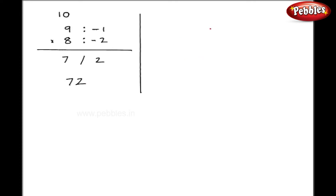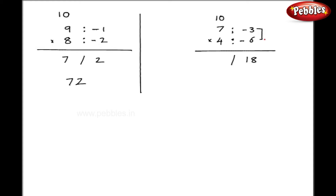Let's take another example. Pay attention to this example because we have some carry overs. I will take 7 into 4. Again my base is 10, and my subtraction is 7 minus 10 is minus 3, and 4 minus 10 is minus 6. On the right hand side I have the multiplication: minus 3 into minus 6 is 18. On the left hand side I get 7 minus 6 or 4 minus 3, which is 1. But here the number of digits on the right hand side is two, but the number of zeros in the base is only 1.